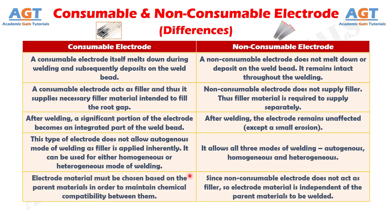Number 5: Consumable electrode material must be chosen based on the parent materials in order to maintain chemical compatibility between them, whereas since non-consumable electrode does not act as filler, the electrode material is independent of the parent materials to be welded.